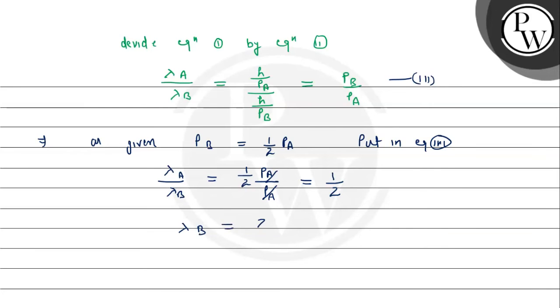Lambda B is equal to 2 into Lambda A. Lambda A is given as 2 into 5 into 10^-8 meter, which equals 10 into 10^-8 meter, which is equal to 10^-7 meter. 10^-7 meter equals 10^-7 into 100 centimeter which is